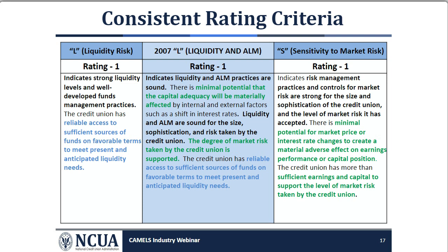We'll now discuss the updated one-to-five ratings for both the S and L components. An L rating of one indicates strong liquidity levels and well-developed funds management practices — the credit union has reliable access to sufficient sources of funds on favorable terms to meet present and anticipated liquidity needs. An S rating of one indicates risk management practices and controls for market risk are strong for the size and sophistication of the credit union, with minimal potential for market price or interest rate changes to create a material adverse effect on earnings or capital.